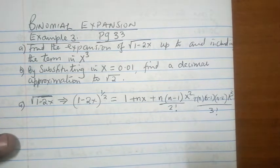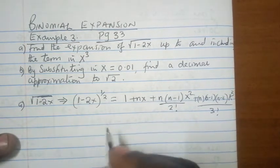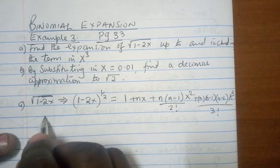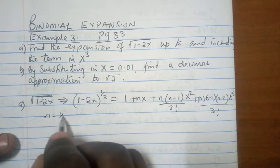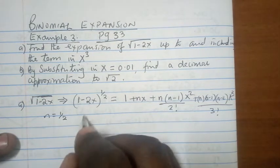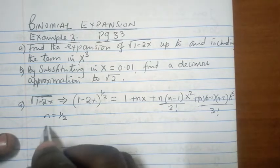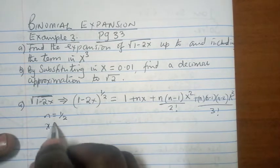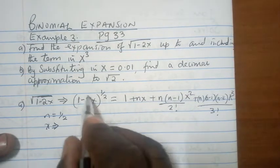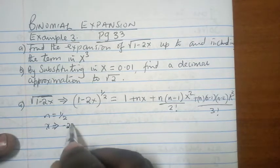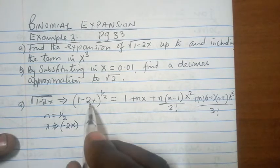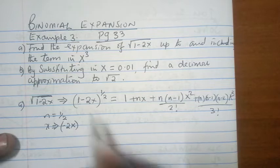Moving forward, you can already see that our n is a half. And in the place of x, our x, we are going to substitute negative 2x. The whole of that is sitting in place of x.